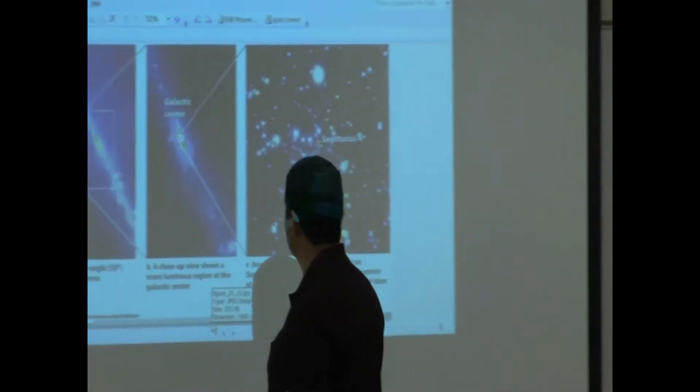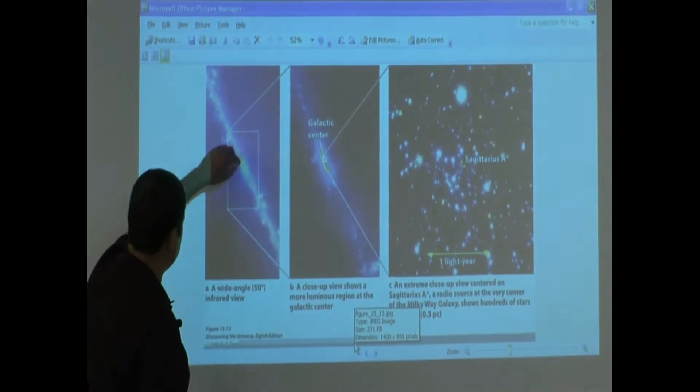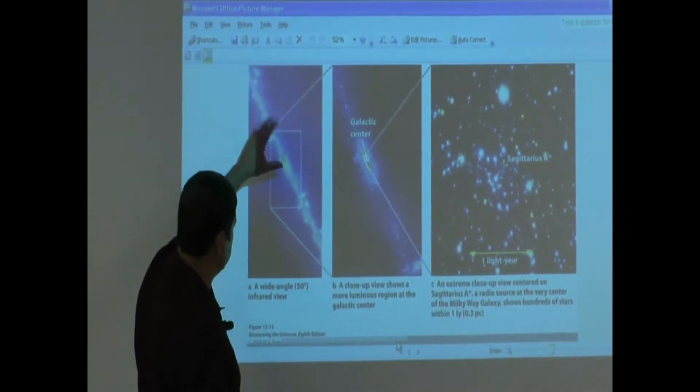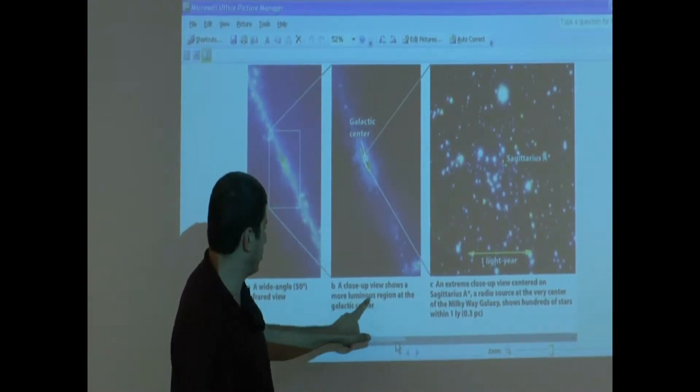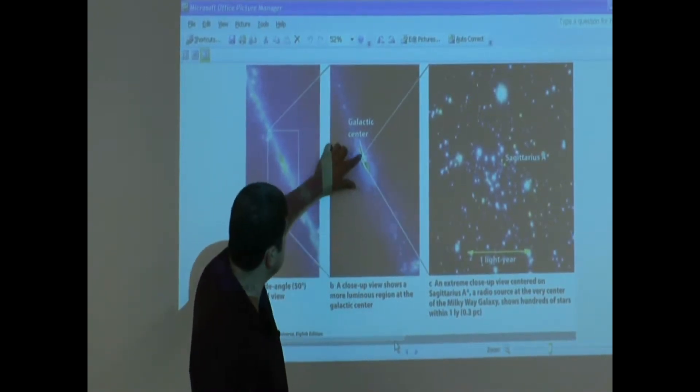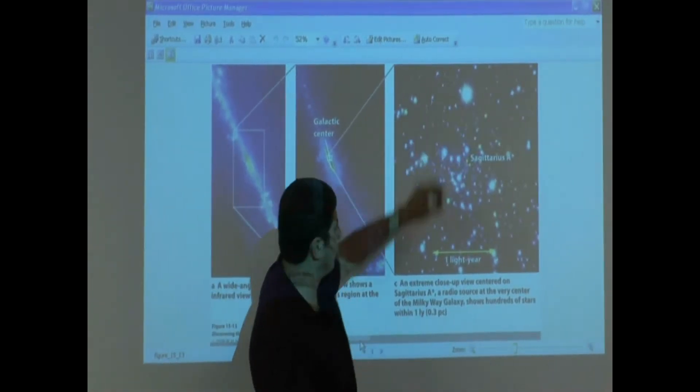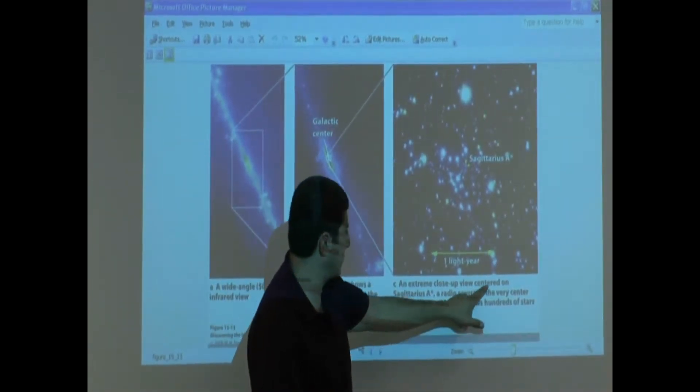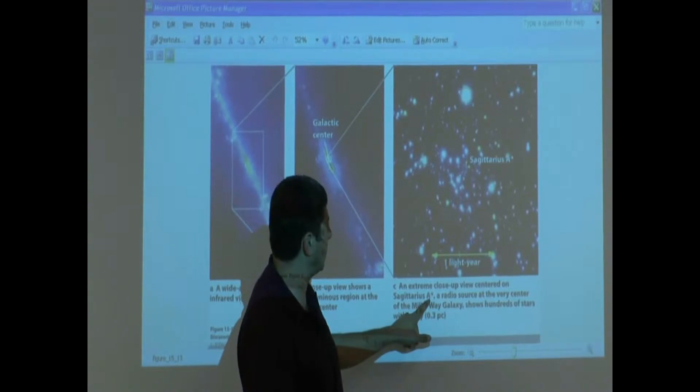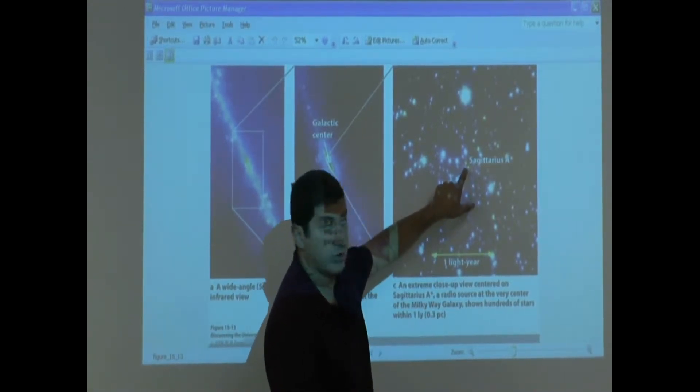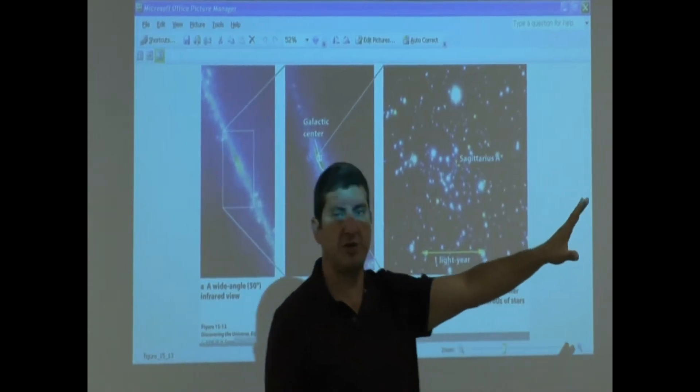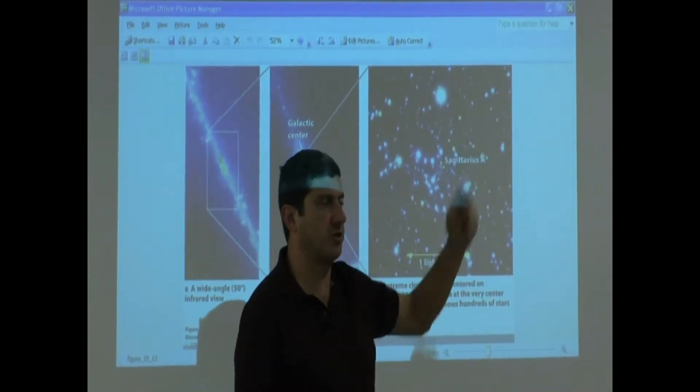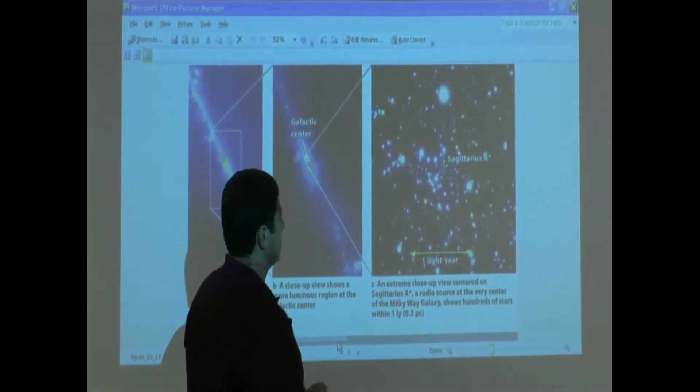This is a view of the galactic center. You see all the energy emitted from the center? And we start blowing it up. The close-up view shows a more luminous region at the galactic center. Then we blow it up even more. An extreme close-up view centered on Sagittarius A. They call that Sagittarius A because it's in the direction of the constellation Sagittarius, and they call that radio source the Sag A.